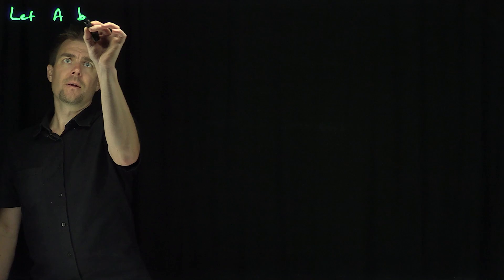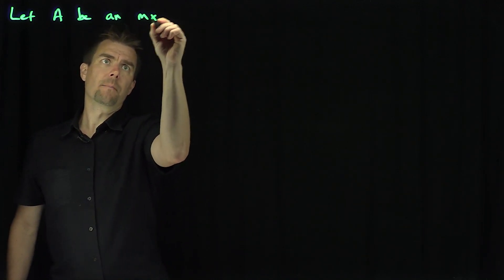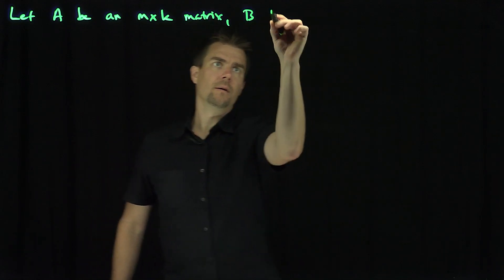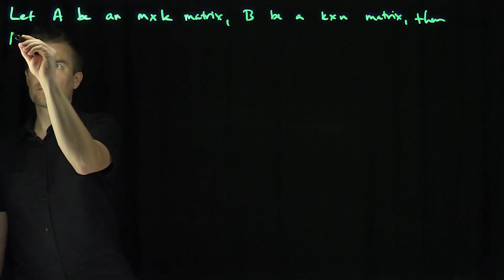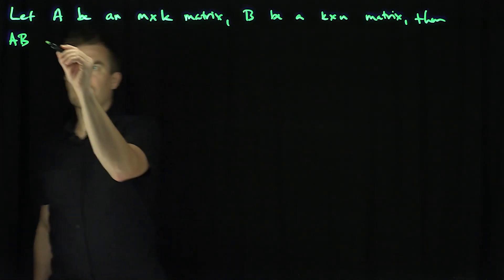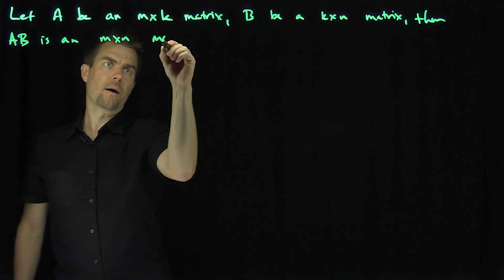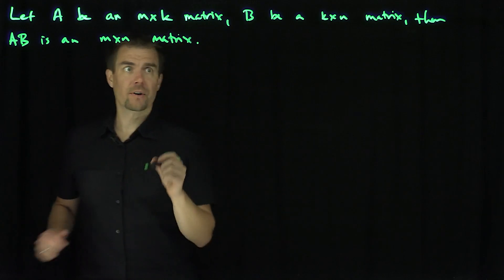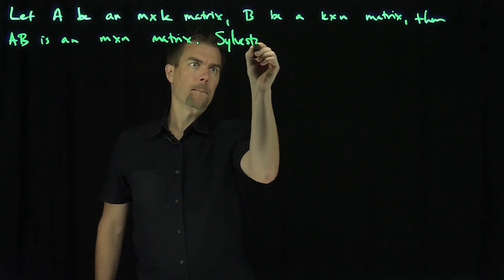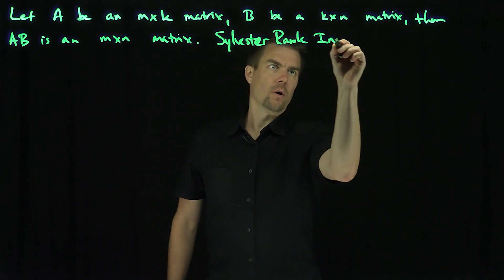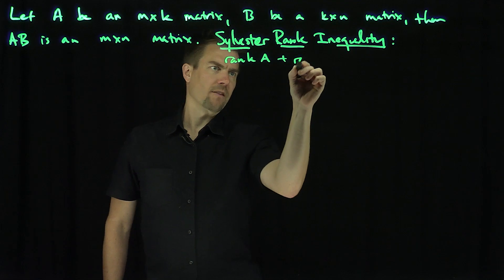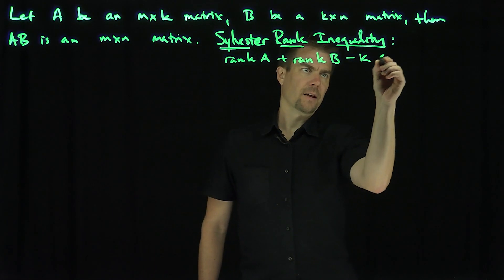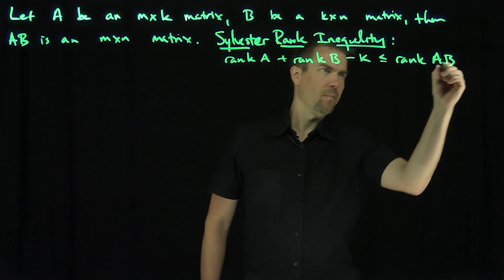Hello students. In this video we'll prove the Sylvester rank inequality. Let A be an M by K matrix and B be a K by N matrix. Then AB makes sense — A is M by K and B is K by N, so AB is M by N. The Sylvester rank inequality states that the rank of A plus the rank of B minus K is less than or equal to the rank of AB.